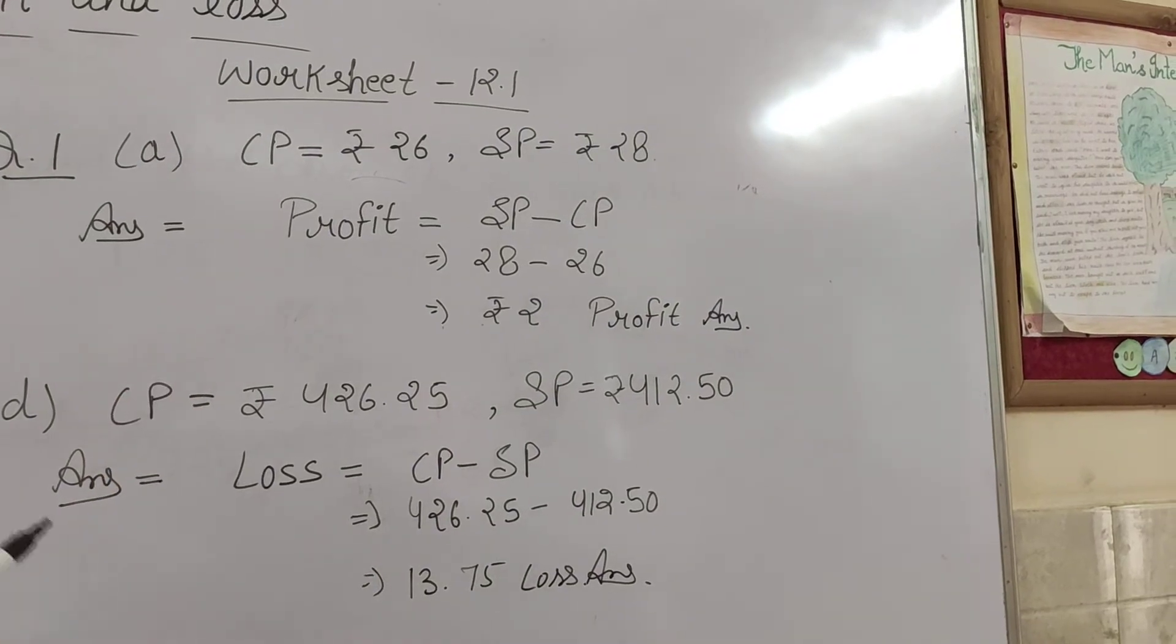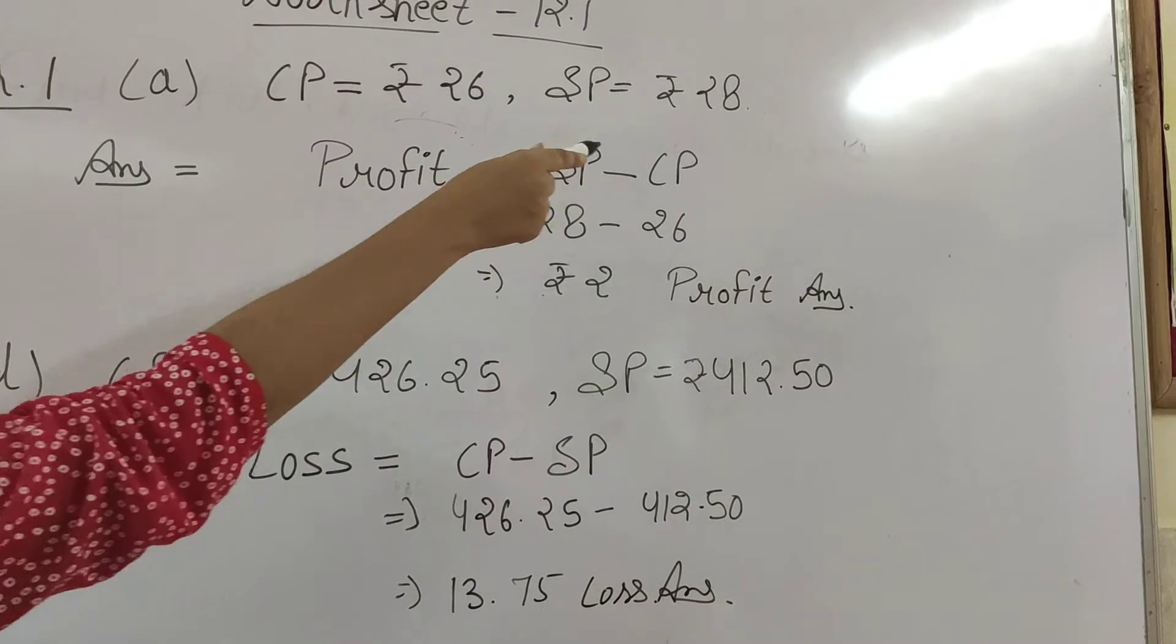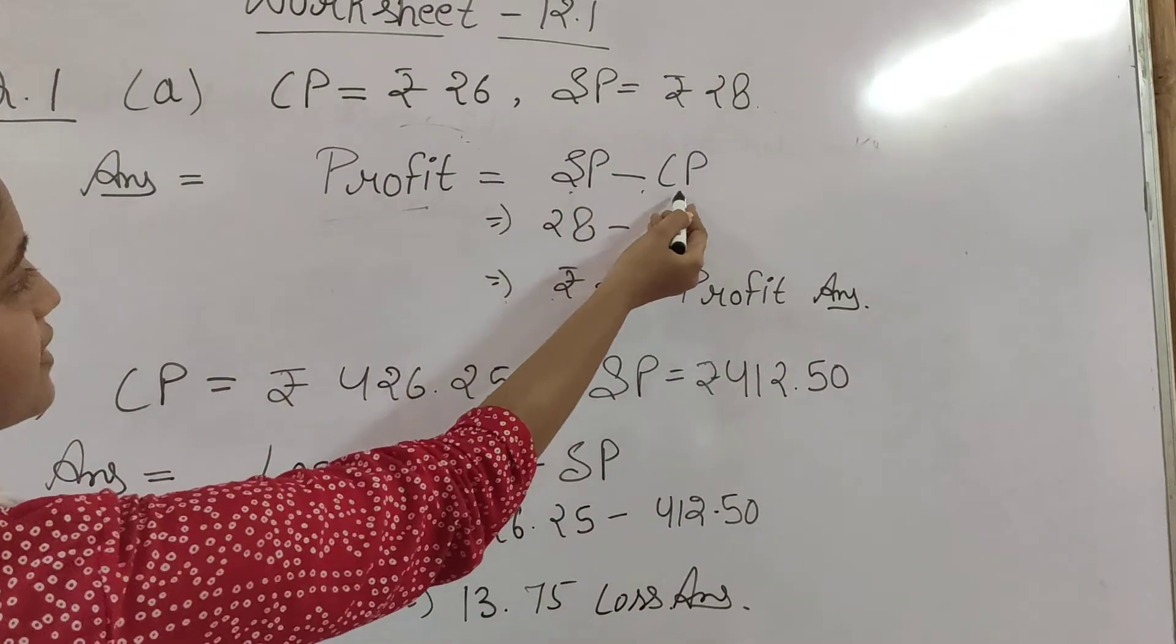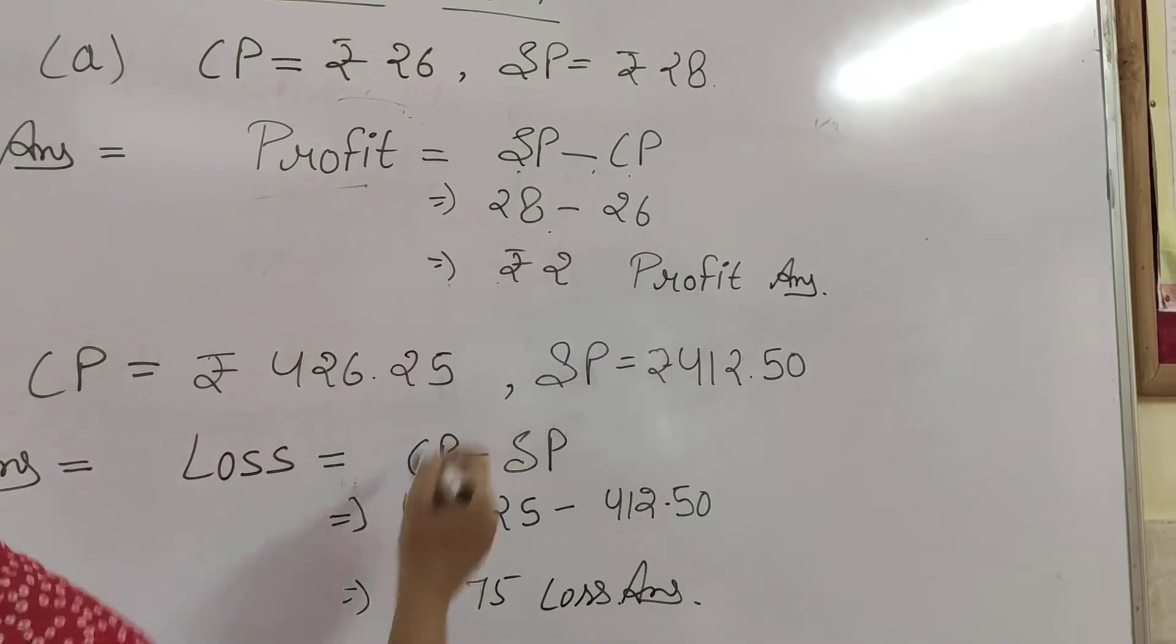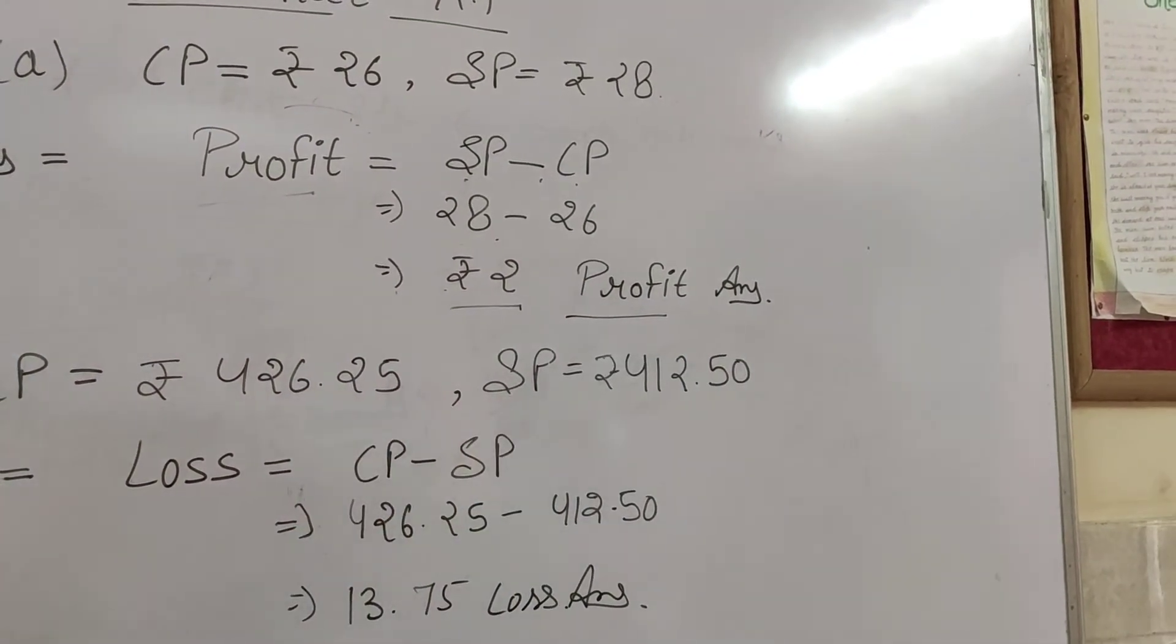So what happened? There is profit. If you bought at ₹26 and sold at ₹28, there is profit. The profit formula is SP minus CP. So 28 minus 26 gives us the answer: ₹2 profit.